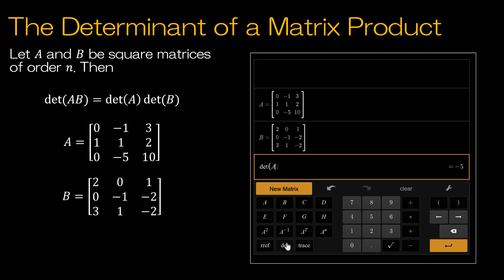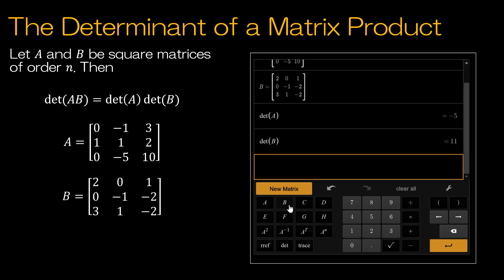So if I find det A, that's negative 5, determinant of B is 11, and so obviously that would be negative 5 times 11, which is negative 55. Now if I find the determinant of AB, notice we do get negative 55, thus verifying that property.